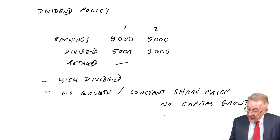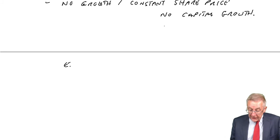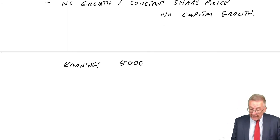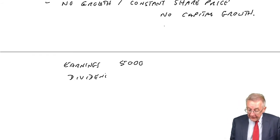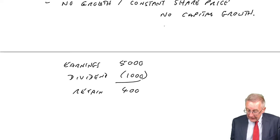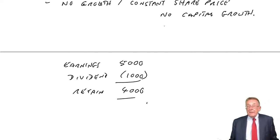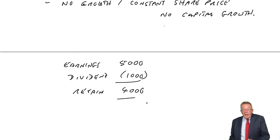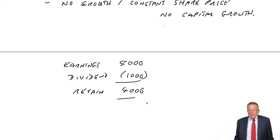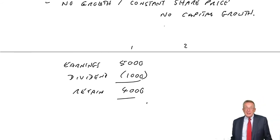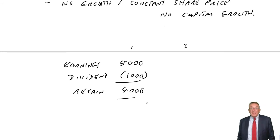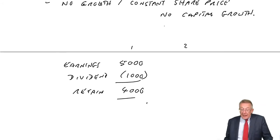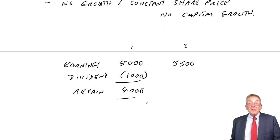So what they might decide to do instead — earnings £5,000 — they may decide to pay out a much lower dividend, perhaps £1,000, and retain the remaining £4,000. Of course, if they are retaining money, they've got money to invest and expand the company, and therefore you're going to expect higher earnings next year. Maybe the earnings next year are going to go up as a result to £5,500.